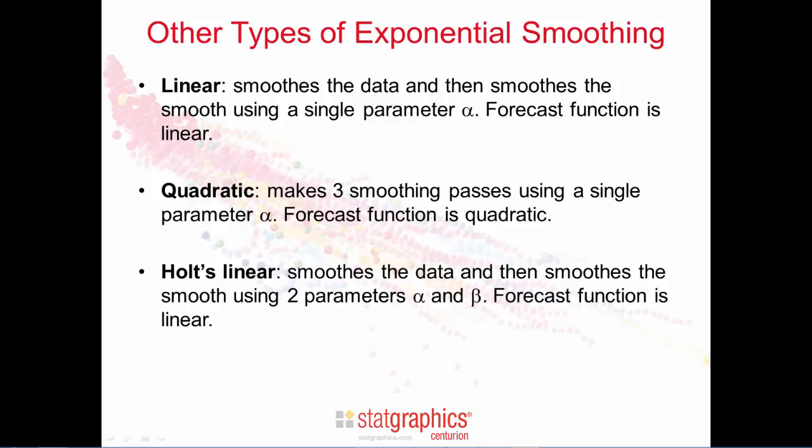Like linear exponential smoothing, Holt's linear exponential smoothing smooths the data and then smooths the smooth. It differs, though, in that it uses two different smoothing parameters during those two phases. The forecast function of Holt's linear exponential smoothing is linear.